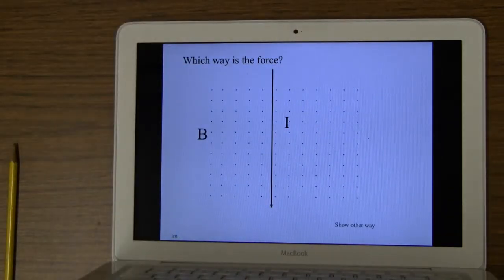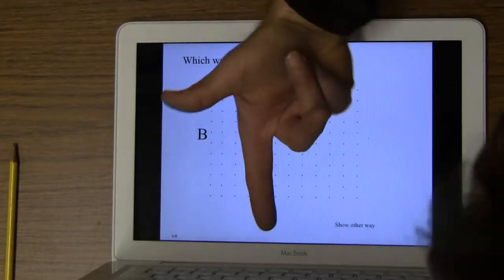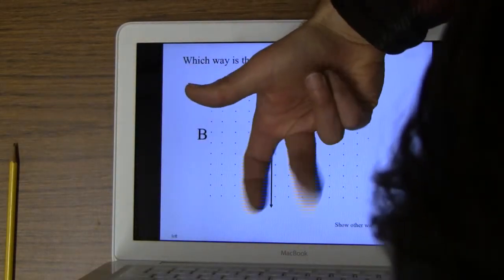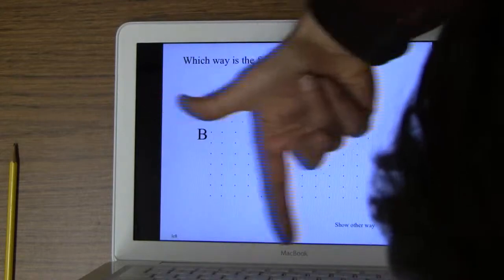Okay, I can do this. Current is this way, magnetic field is out of the page, so here's current, magnetic field, force would be this way.